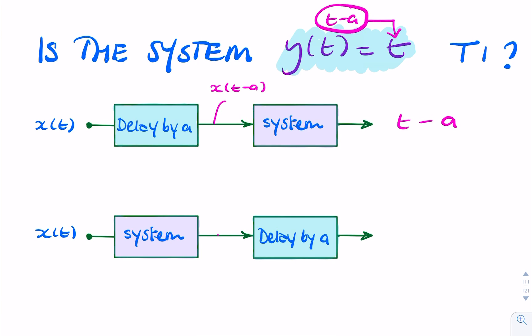But if you then try applying x of t to the system and then delaying it, it won't be the same, because the output to the system here will simply be t. That's what we're told in the question. And if you take that value, t, and you delay it by a, it'll still be t.